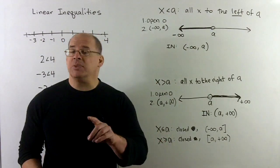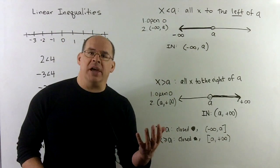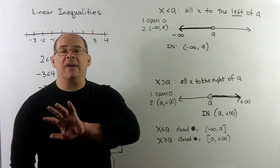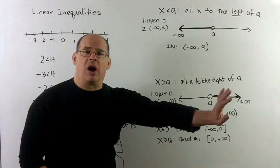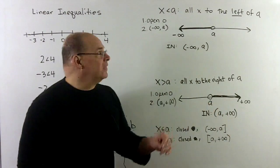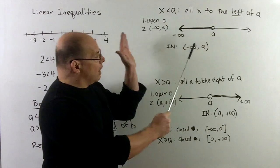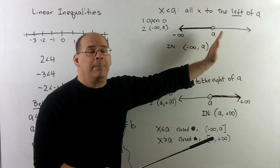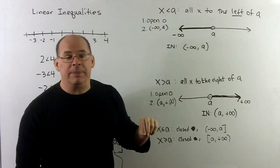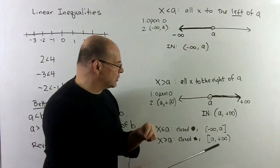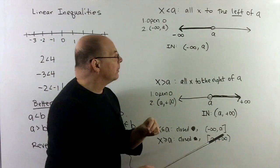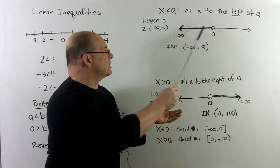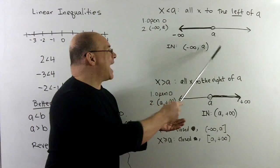We also have interval notation. The way to think about it: once you have your picture, just start at the left, see where you start, go all the way to the right, see where you stop. In this case, starting all the way to the left, we start at minus infinity, then stop when we get to a. To indicate we're not keeping a, we use a parenthesis instead of a bracket. So the interval notation for this half line, where we're not keeping a, is written as (−∞, a).